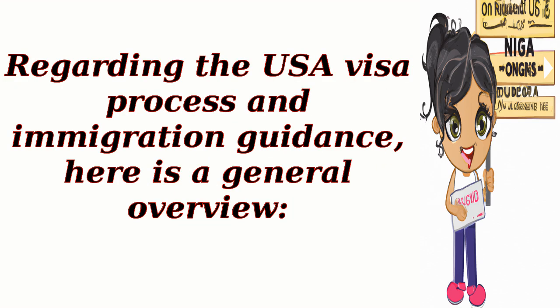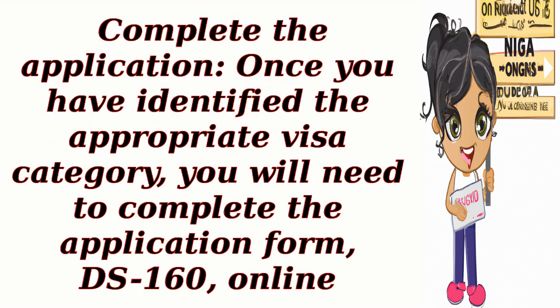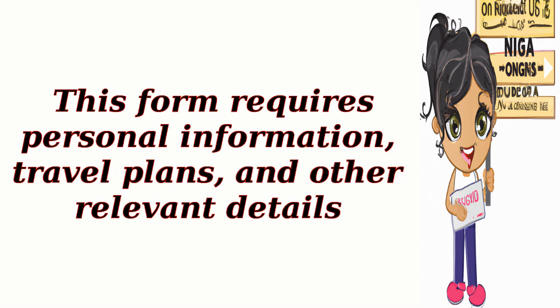Regarding the USA visa process and immigration guidance, here is a general overview. Determine the visa category. The first step is to determine the type of visa you need based on your purpose of travel, such as work, study, tourism, or family visit. The U.S. Department of State's website provides detailed information on different visa categories.